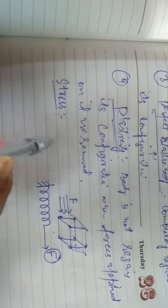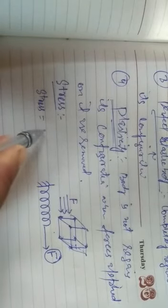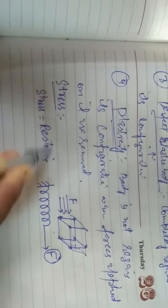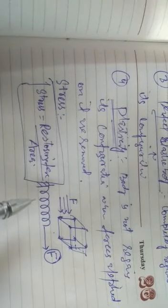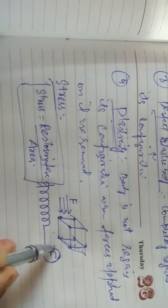Stress is defined as the internal restoring force developed per unit area of the body, which tends to bring the body back to its original configuration. So, stress equals restoring force per unit area. Now, if there is no permanent deformation — that is, there is absence of plastic behavior — then the restoring force is equal in magnitude but opposite in direction to the applied force.